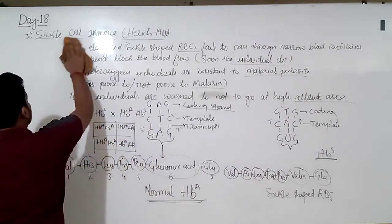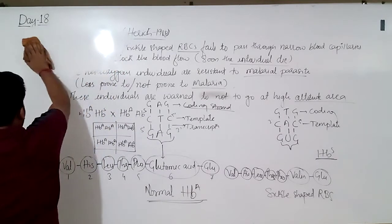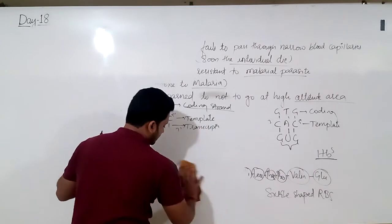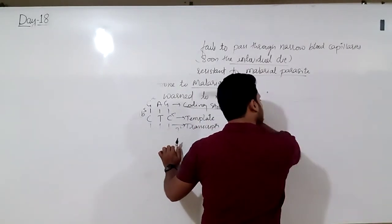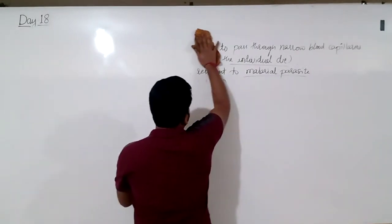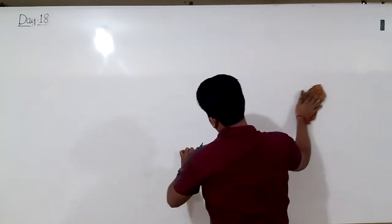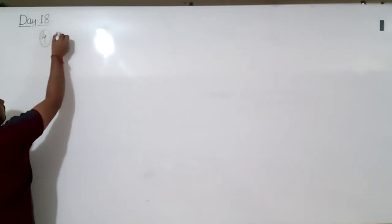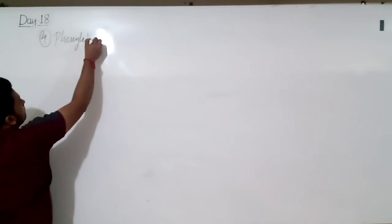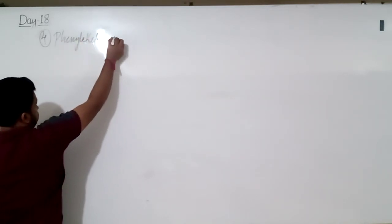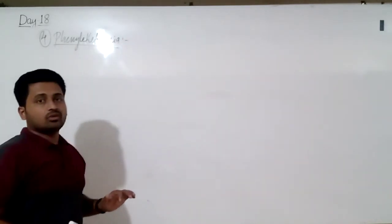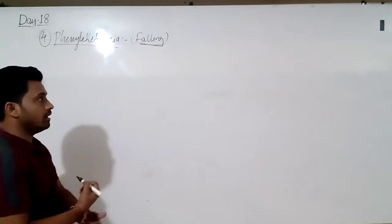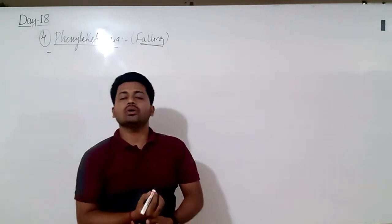After sickle cell anemia, we move to the next disorder: phenylketonuria (PKU). This is the fourth disorder, and it is very important for entrance exams. It was discovered by scientist Folling in 1934.